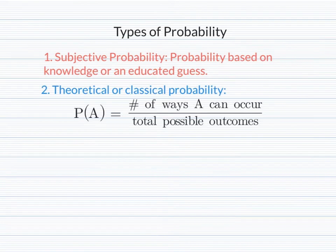The next type of probability is called theoretical, or sometimes called the classical approach to probability. This says that the probability of an event is equal to the number of ways A can occur over the total number of possibilities. The probability comes from what should happen. So if you're looking at rolling a dice and you want to find the probability of rolling a 1.